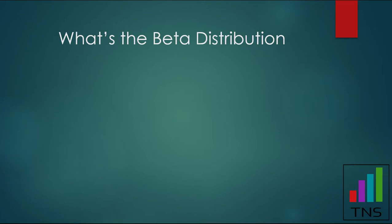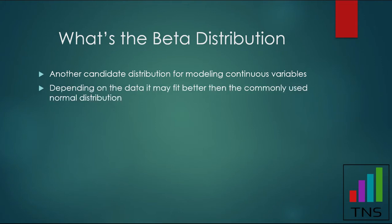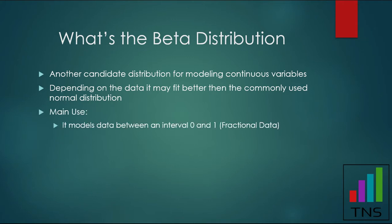So first question right off the bat: what exactly is the beta distribution? It's basically another candidate distribution for modeling continuous variables — basically any number like 2.5 or 2.99999, essentially continuous data. Specifically, it's used whenever you want to find a better fit for your data than something super commonly used in statistics and data science, which is the normal distribution. The beta distribution is an alternative to that because it may fit your data better.